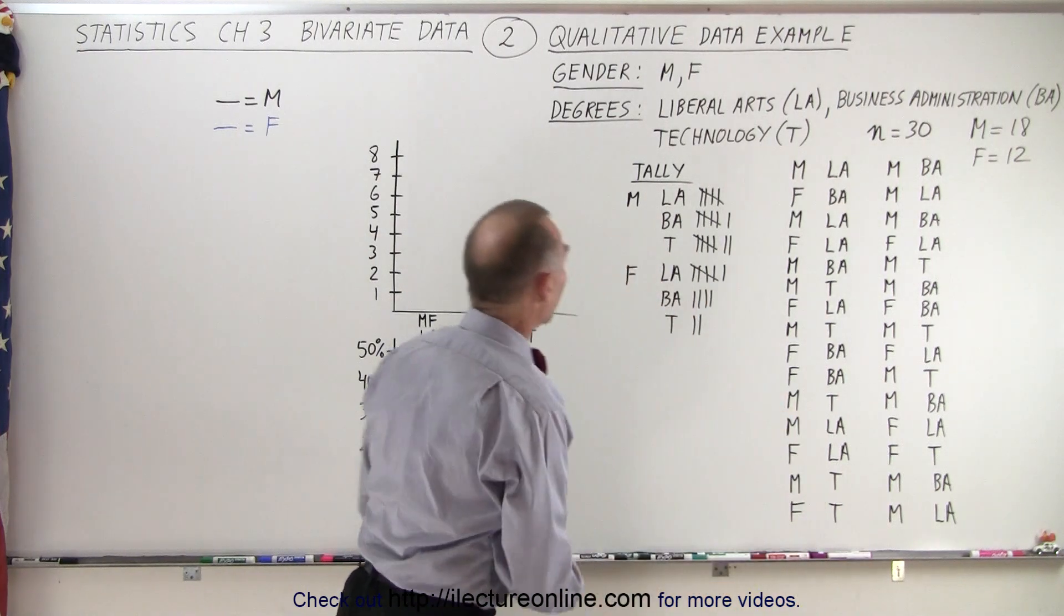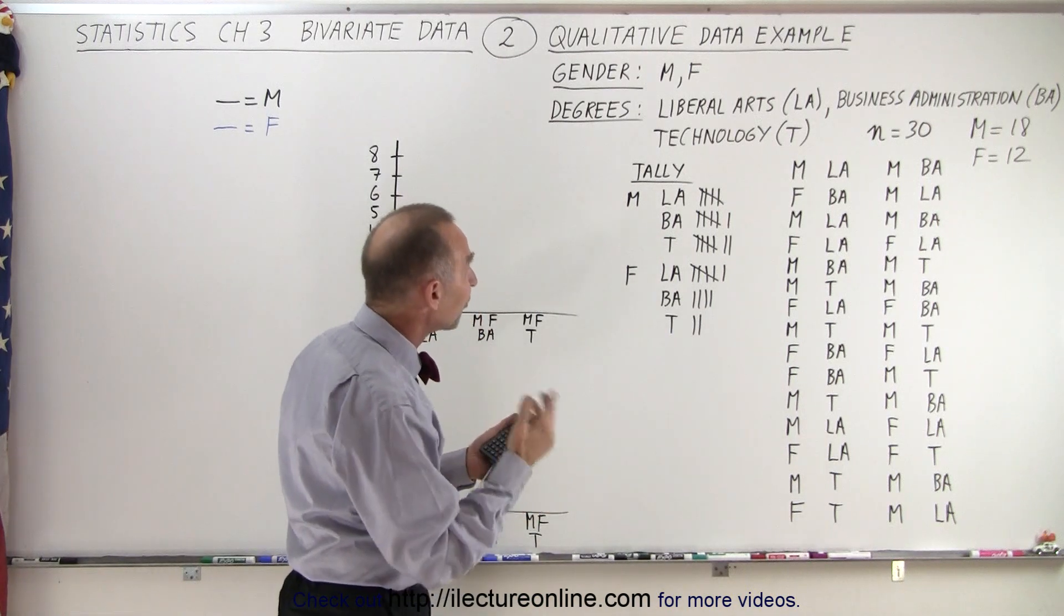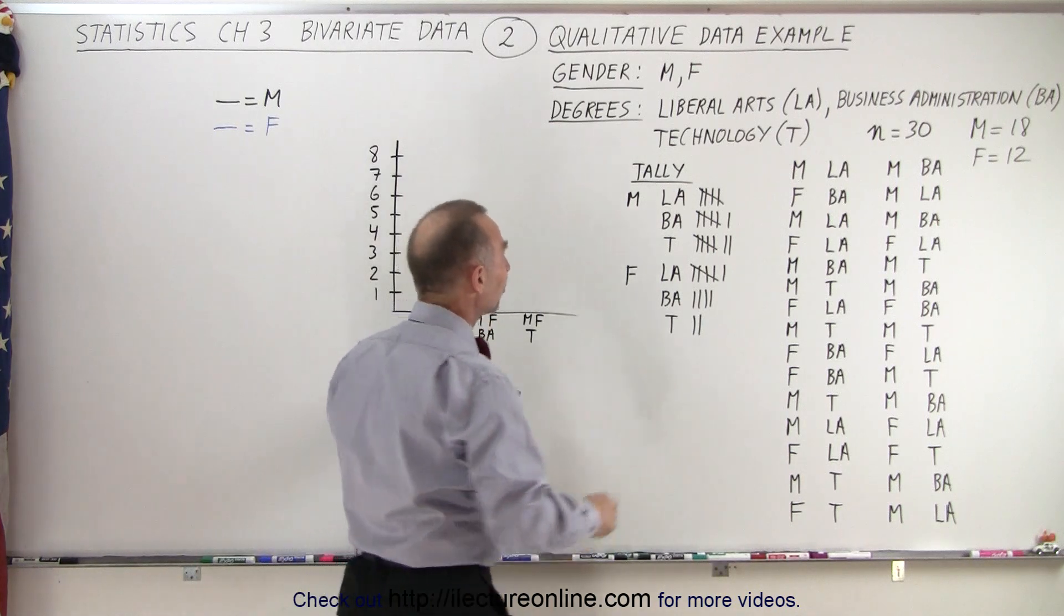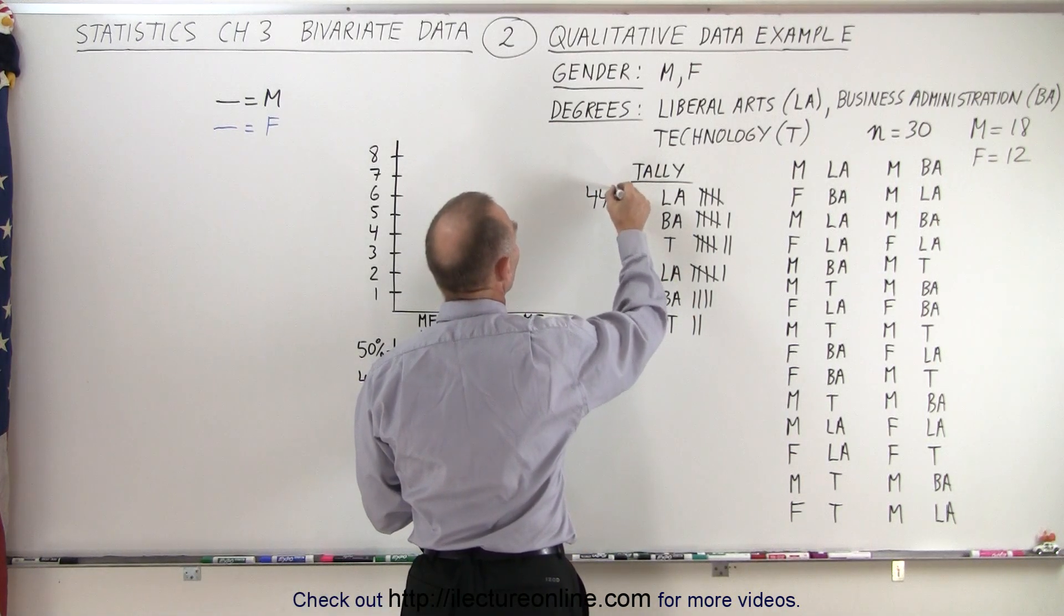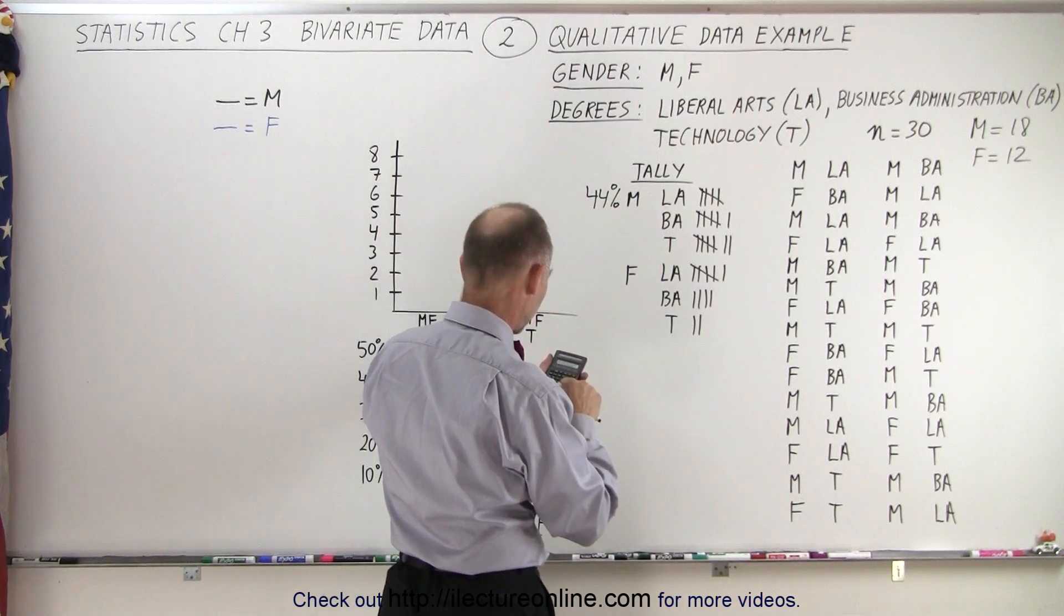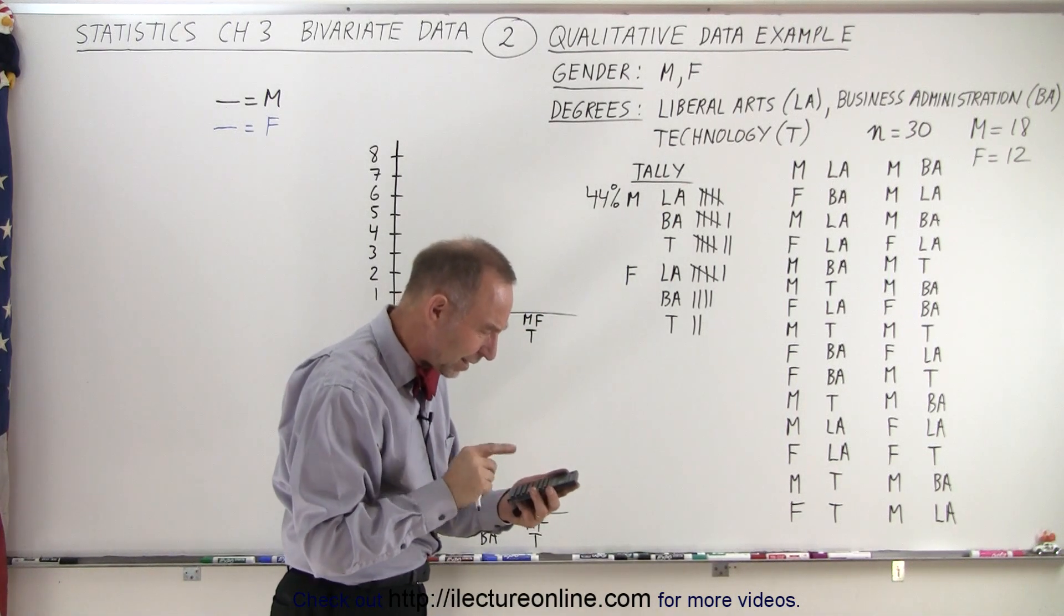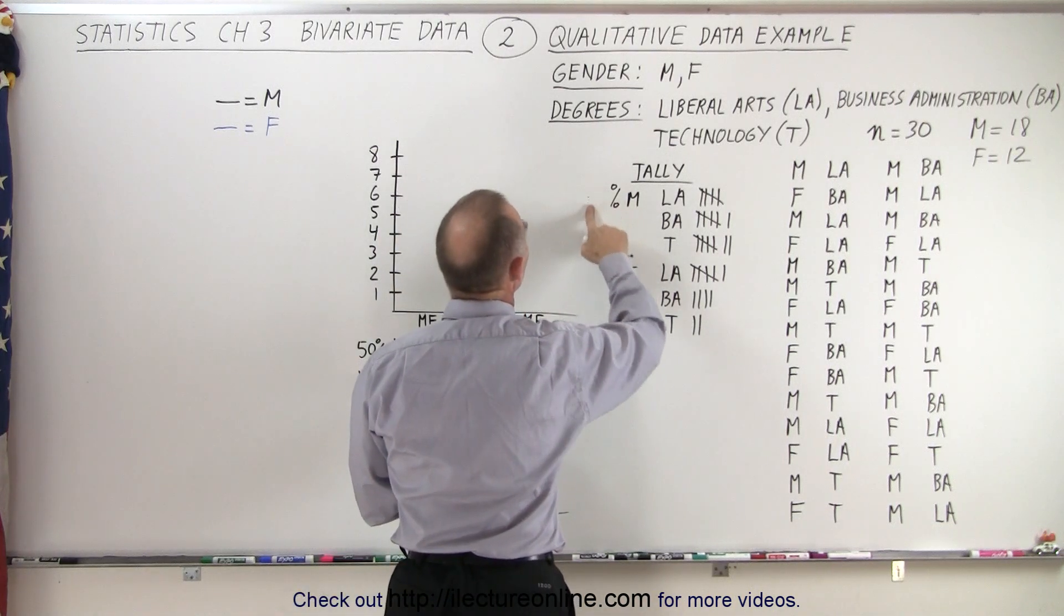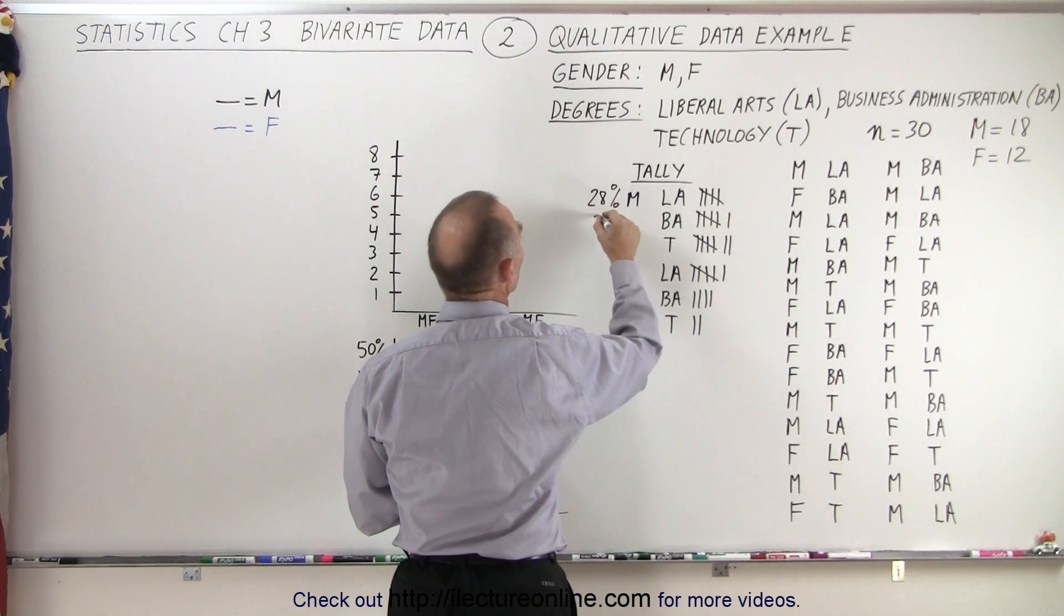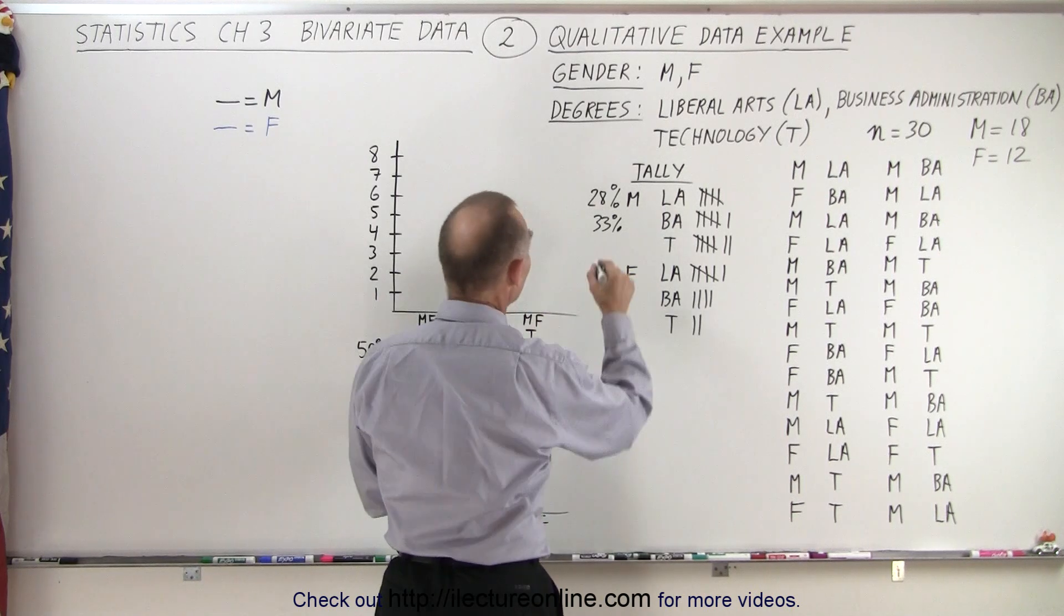For example, since there are 5 students that are male that have a Liberal Arts degree, that's 5 out of 18. So 5 divided by 18, which is 28%. So that's 28% will obtain a Liberal Arts degree. 6 out of 18, that's 33%. And 7 out of 18, 7 divided by 18, that's 39%.